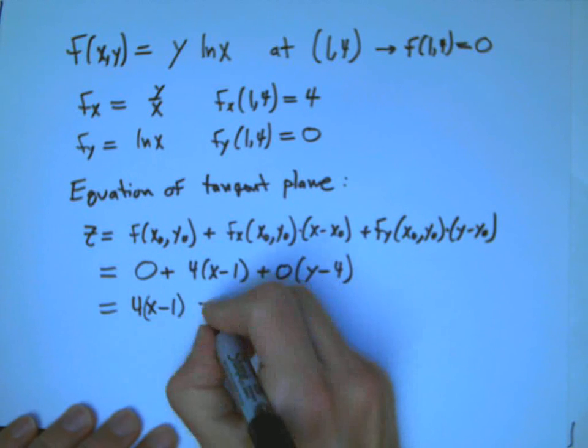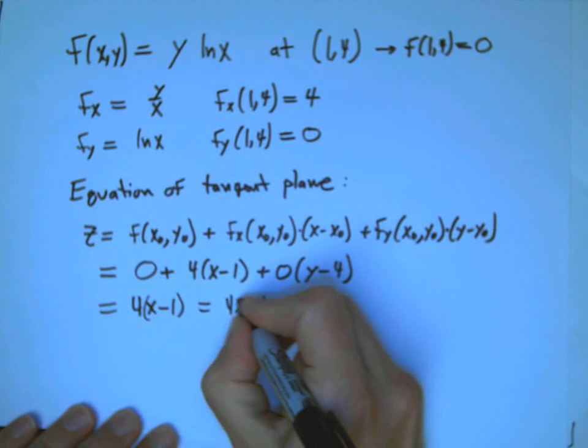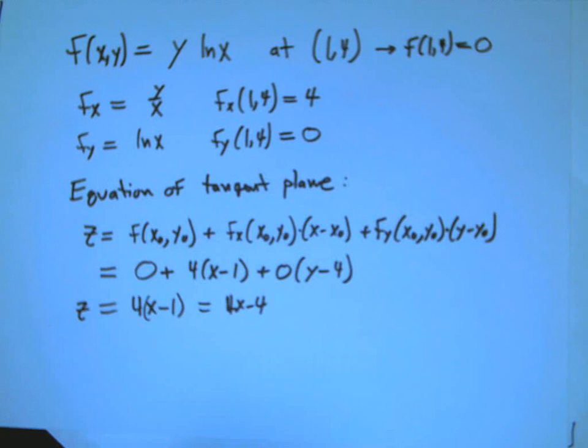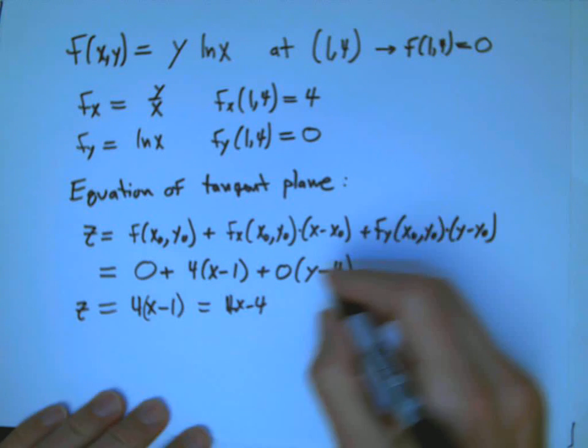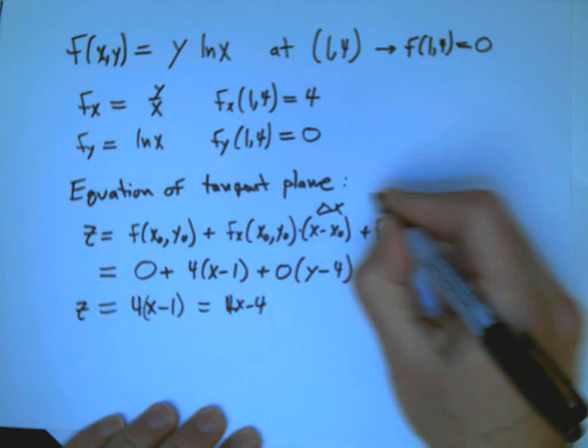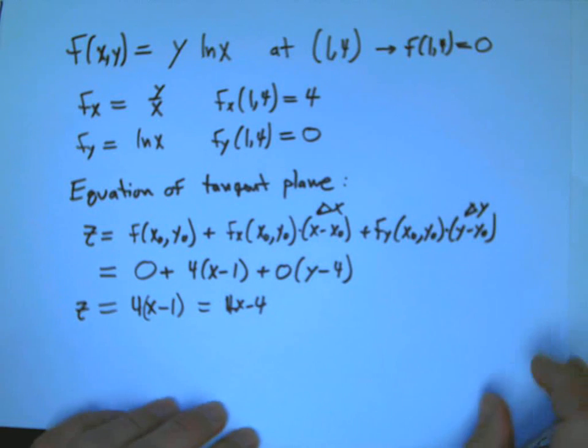You get a very simple equation, 4(x - 1), or 4x - 4 if you want. But to be honest, a lot of the time it's better to keep these groups, x - 1 and y - 1, because remember they have a meaning. These are Δx and Δy.